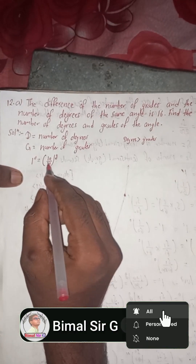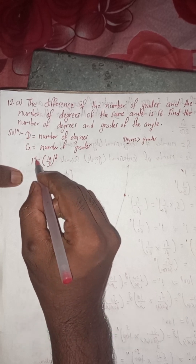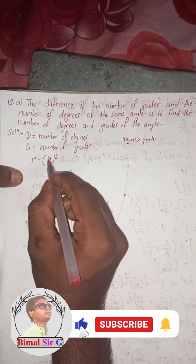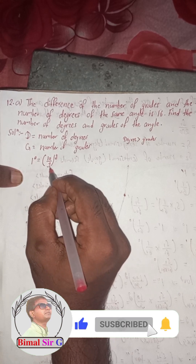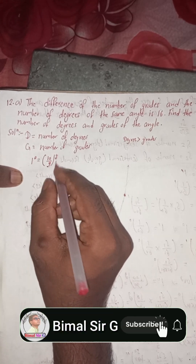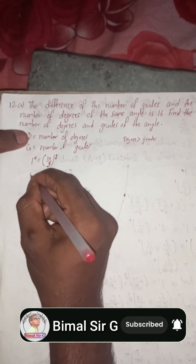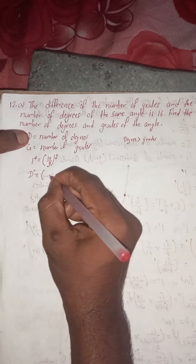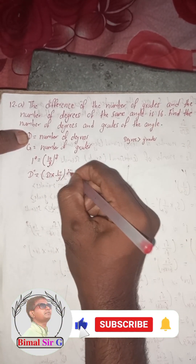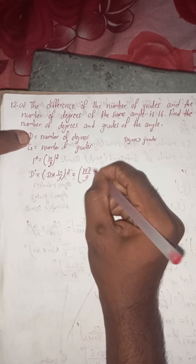How to remember this formula — I have already discussed in the previous chapter. When we write degree, write 1 and degree. This looks like zero, so this is 10, and the denominator will be 9, and this 9 looks like G. So it will be G. Therefore one degree is equal to 10 by 9 grades. So D degrees is equal to D into 10 by 9, which is 10D by 9.